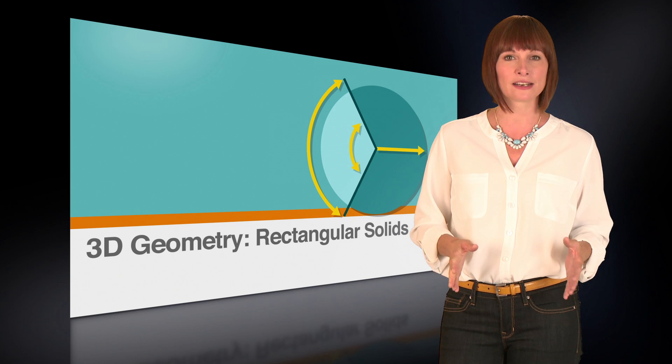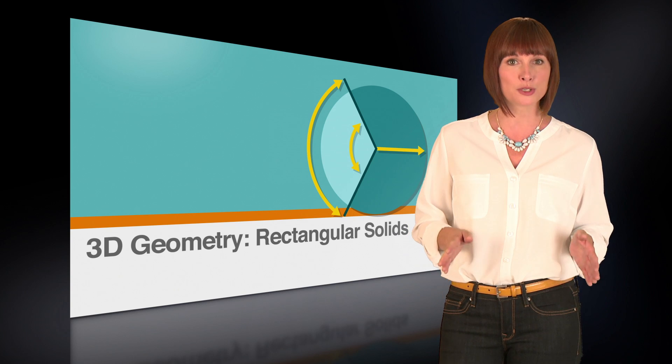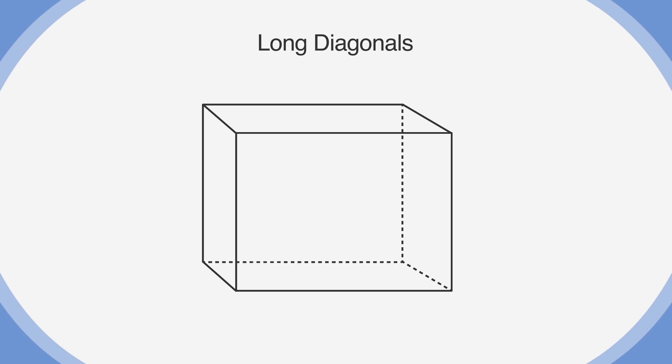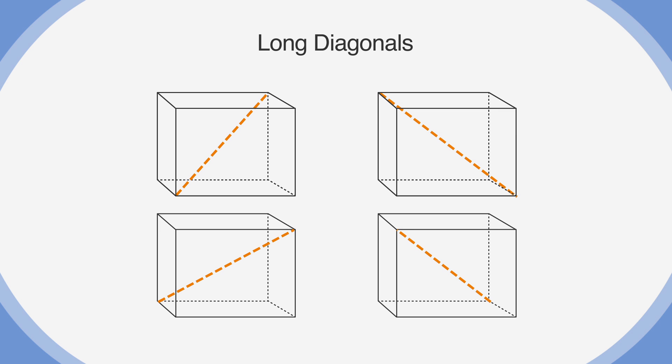The long diagonal of a rectangular solid is the longest line that can be drawn inside the box. It stretches from the bottom left front of the box to the back right top of the box, or any of these other extreme corners.